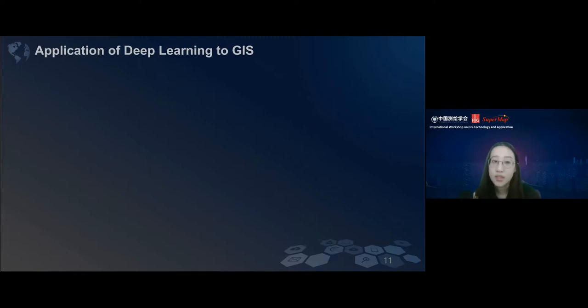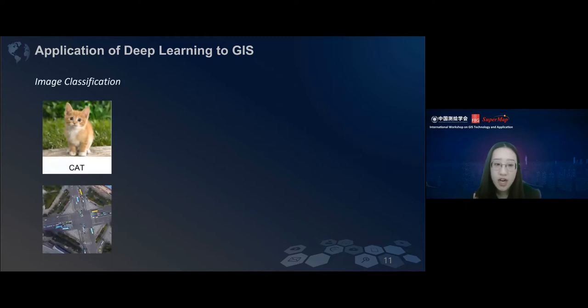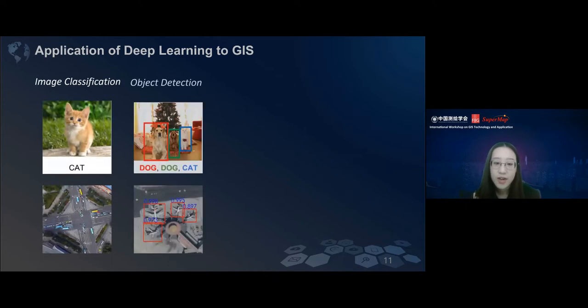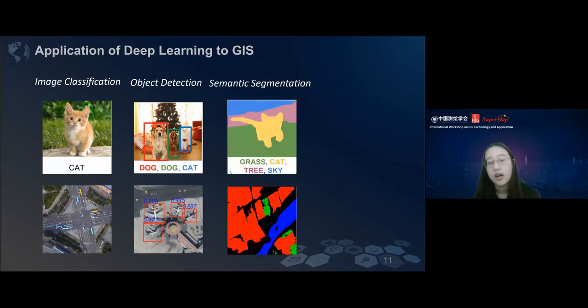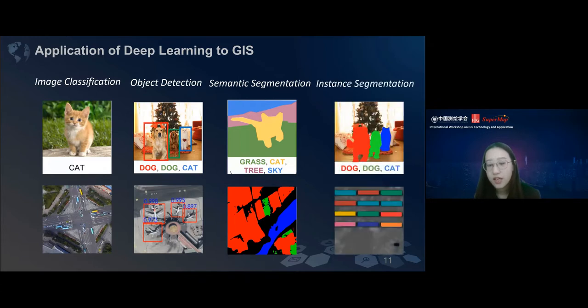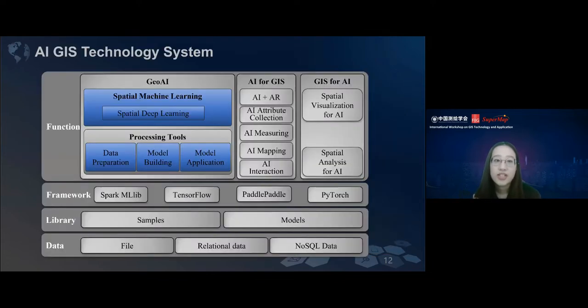For example, we can apply some deep learning algorithms into GIS fields. Like we can see if there's a crossing in this image, and we can find plants in a satellite image, and do land cover classification, or extract the buildings in a file. Here is the AI GIS technology system we draw from bottom to up. We have the data layer, the library layer, the framework layer, and the function layer.